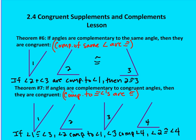In theorem seven, if angles are complementary to congruent angles, then they are congruent. Here, angle one and angle three are congruent. Angle two is complementary to angle one, and angle four is complementary to angle three, so angle two is congruent to angle four. If I have two congruent angles and two separate angles that are complementary to each of those respectively, then those angles are congruent themselves.